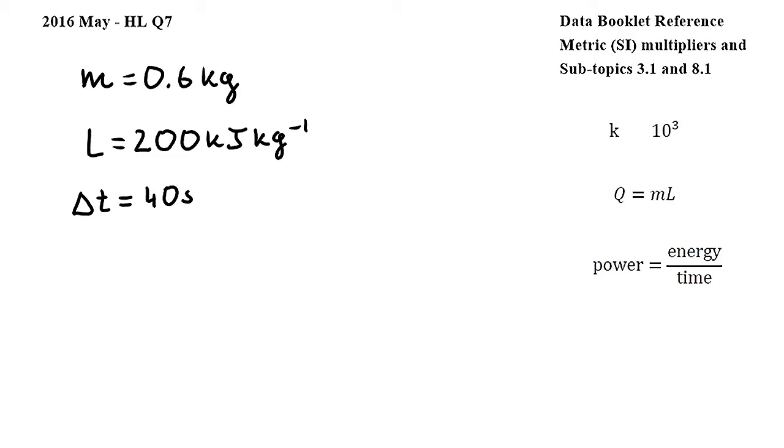We will use this equation from subtopic 3.1, where Q is the energy supplied to the liquid, m is mass, and L is specific latent heat. I will divide both sides of this equation by delta t. So I get Q over delta t is equal to m times L over delta t.